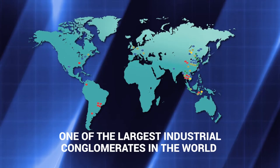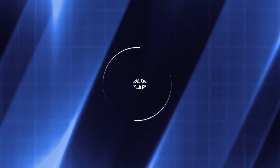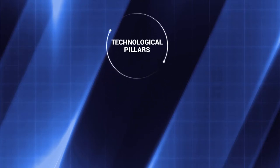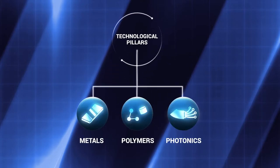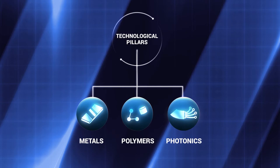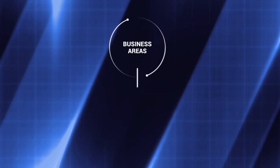With persistent and hard work, one of the largest industrial conglomerates of the world grows. The Furukawa Electric Group basically has three technological pillars: metals, polymers and photonics, and six business areas.